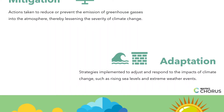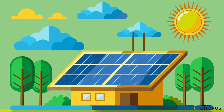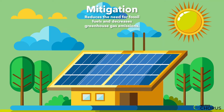Let's see how these concepts apply in the real world. Imagine installing solar panels on rooftops to generate clean energy. This is a form of mitigation, as it reduces the need for fossil fuels and decreases greenhouse gas emissions.